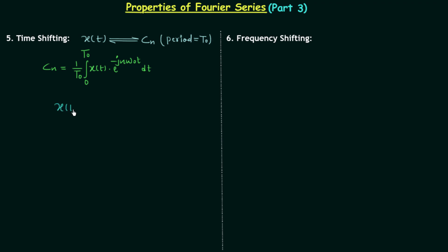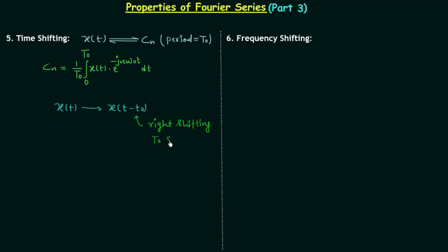We will perform the time shifting operation on signal x(t), and after shifting we have x(t - t0) as the new signal. In this particular case we are performing right shifting — t minus t0 implies right shifting. You can also perform left shifting, giving x(t + t0). Since the signal is only shifting, there is no compression or expansion, so the time period and angular frequency will not change.